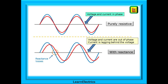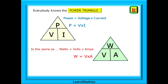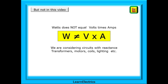This is why ZS, for example, is an impedance and not a resistance — it's a live test on the final circuit that has reactive equipment. Everybody knows the power triangle: power equals voltage times current, written as watts equals volts times amps, W = VA. But not in this video. Here, watts do not equal volts times amps. We are considering circuits with reactance — systems with transformers, motors, coils, lighting and so on.